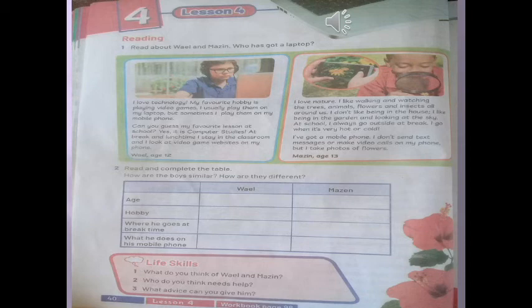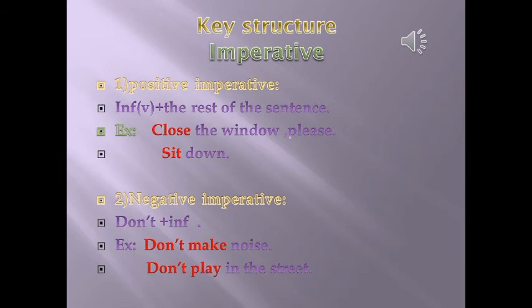Okay, let's look at the key structure for today's lesson. We will talk about the imperative. Number one: the positive imperative. How do we form a positive sentence? We start with the infinitive — the verb — plus the rest of the sentence. For example: close the window, please; sit down; stand up; open the book; close the book.